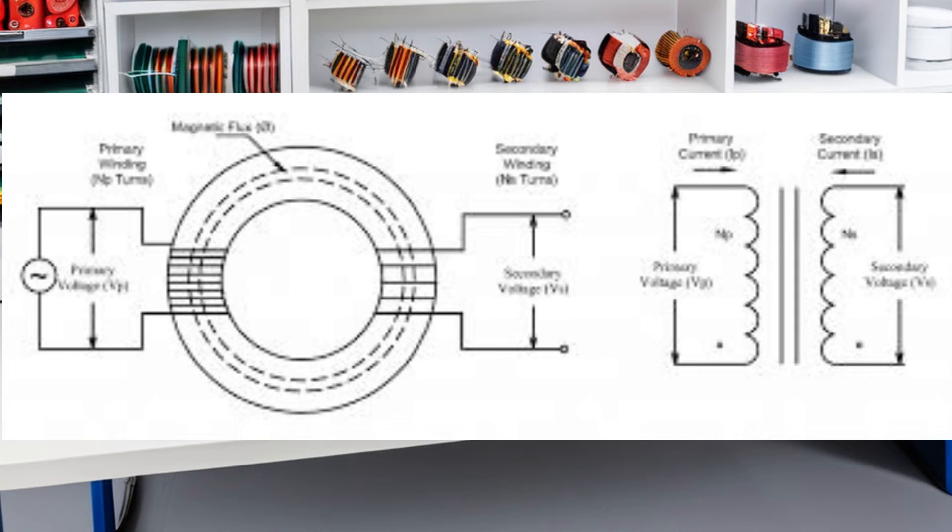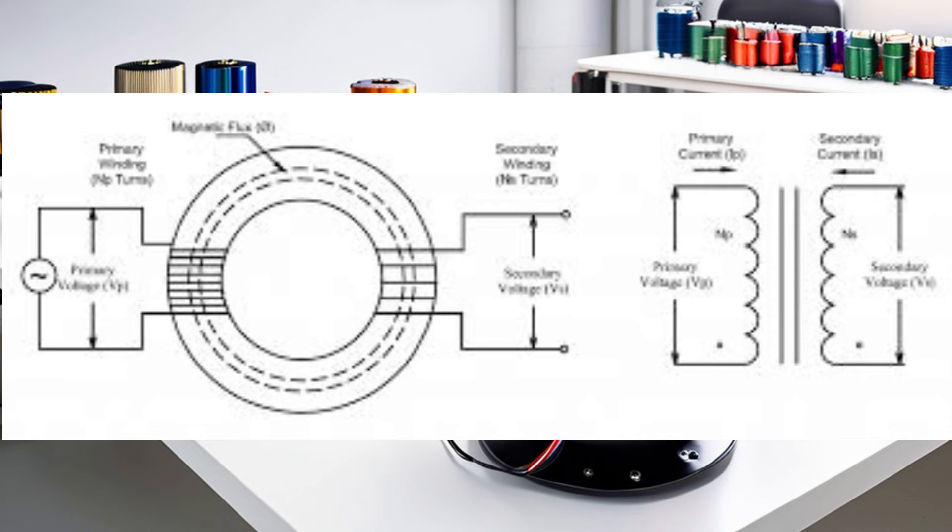Next, we moved on to the secondary winding, where the magic really happens. As the magnetic field from the primary winding cuts through the secondary winding, it induces a voltage. This is the fundamental principle of how a transformer works. The changing magnetic field induces a voltage, or transforms the energy.